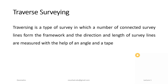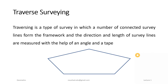Traversing is a type of survey in which a number of connected survey lines form the frame network, and the direction and length of the survey lines are measured with the help of an angle and a tape. Traversing means one of the connected networks of lines that you survey using the method of traversing.